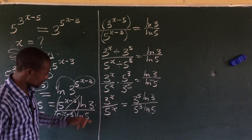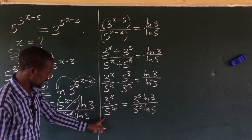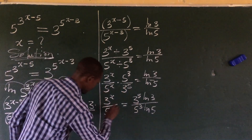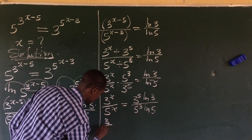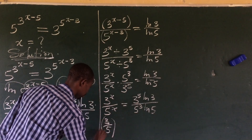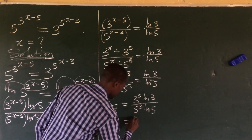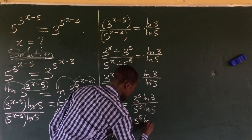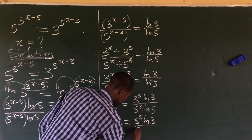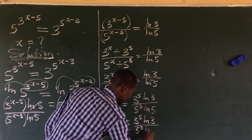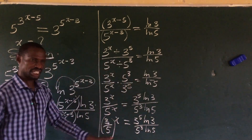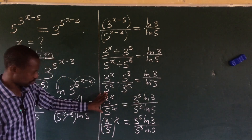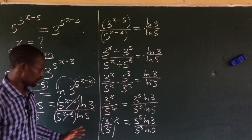We are looking for x. According to the law of indices, since we have 3 to the x over 5 to the x, we can factor out the x. So we rewrite this as 3 over 5, all to the power of x, equals 3 to the power of 5 times ln of 3, all over 5 to the power of 3 times ln of 5. Distributing the exponent into the bracket gives us x.